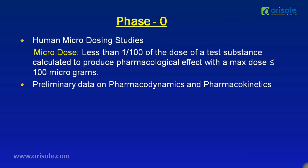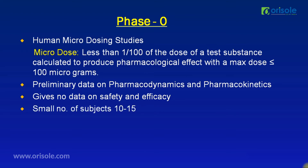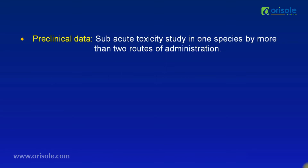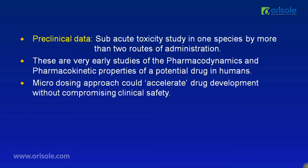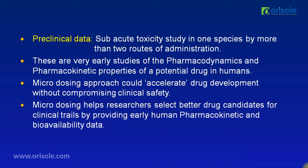Phase 0 studies provide preliminary data on pharmacodynamics and pharmacokinetics, but give no data on safety and efficacy. Preclinical data required includes a sub-acute toxicity study in one species by more than two routes of administration. Phase 0 studies are very early studies of pharmacodynamic and pharmacokinetic properties of a potential drug in human beings. The microdosing approach can accelerate drug development without compromising clinical safety, and helps researchers select better drug candidates by providing early human pharmacokinetic and bioavailability data.